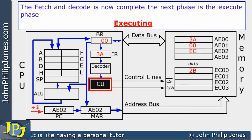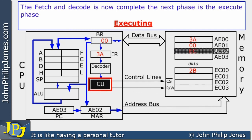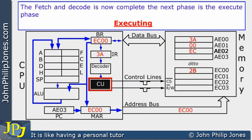We then see that the program counter does the same thing again and a different address goes out on the address bus, selecting the next location and bringing in the EC. The pattern now goes to the memory address register, goes out with the appropriate pulses, selects this address, gets the 2B, brings that into the buffer register, and then transfers it to the accumulator.